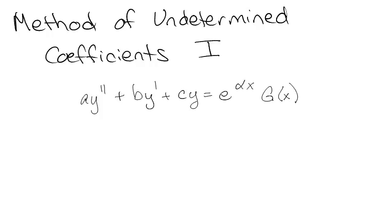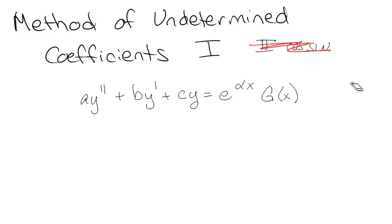We're going to look at the method of undetermined coefficients, part 1. Later I'm going to do part 2 with sines and cosines. Right now we're looking at what is kind of the easy stuff — and by easy I mean easier than, say, tensors. We're looking at a constant coefficient, second-order, linear ODE with something on the right in the form of e to some power times some other function.